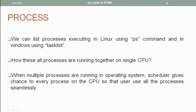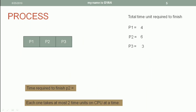One question you may have: if there are that many processes executed by the operating system and we have only four or eight cores in the CPU, how does the operating system manage to execute such a large number of processes simultaneously on just four or eight cores? How are all these processes running together on a single CPU? When multiple processes are running, a special program called the scheduler gives a chance to every process on the CPU so that a user can use all the processes seamlessly. The question is how does the OS schedule various processes on the CPU?